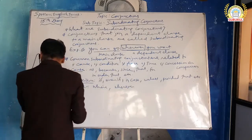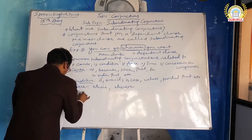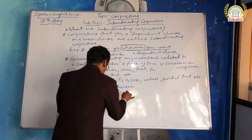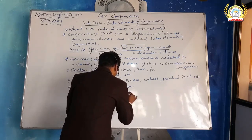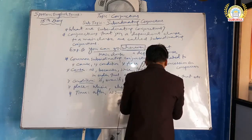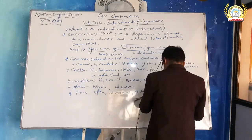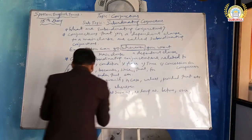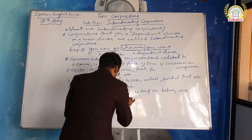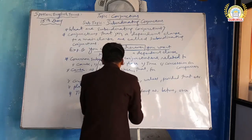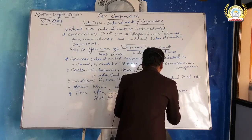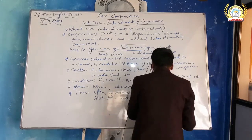Number four: time. Conjunctions in this category include: after, as soon as, as long as, as, before, once, still, till, until, when, whenever, while.